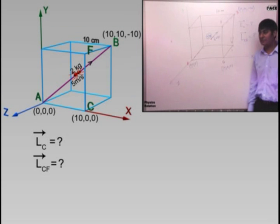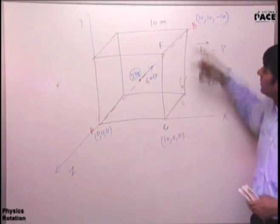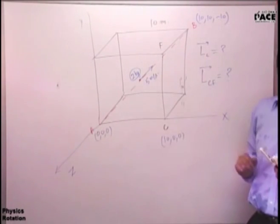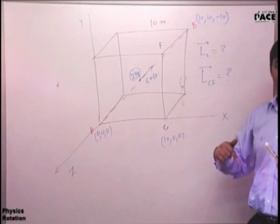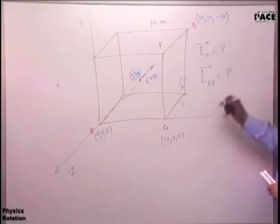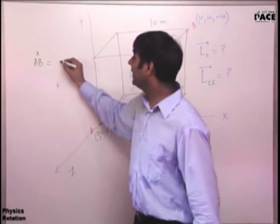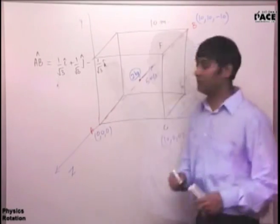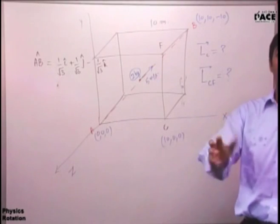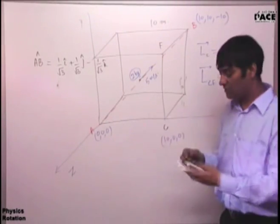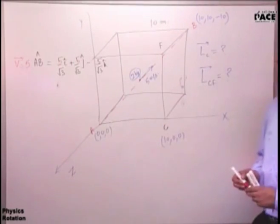Multiplying the unit vector by the speed magnitude of 5 m/s gives the velocity vector V = (5/√3)(î + ĵ − k̂). Now, to find angular momentum about C, I draw a position vector from C to any point on the line of velocity. I choose point A: vector CA = position vector of A minus position vector of C = −10î. So R = −10î, and V = (5/√3)(î + ĵ − k̂).